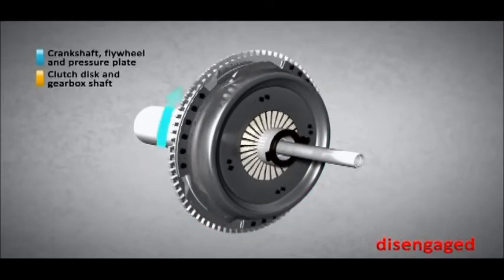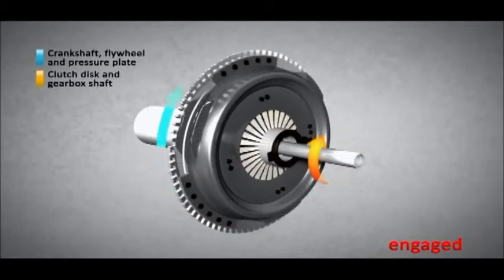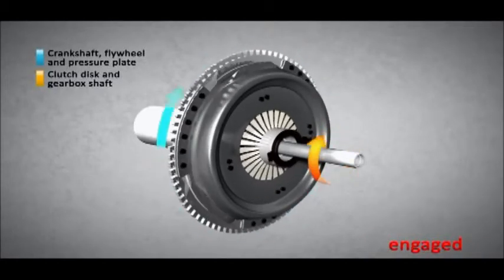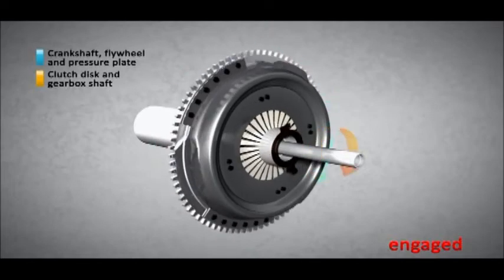The mechanical energy produced by the engine is transmitted to the gearbox when the clutch release bearing is released and the clutch disc is engaged.